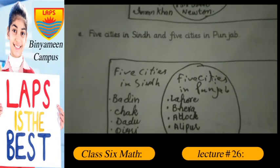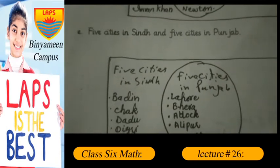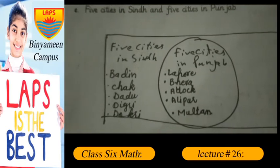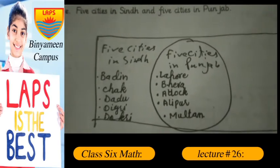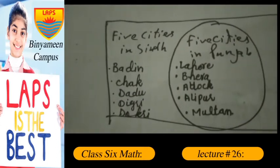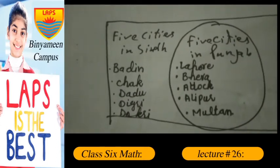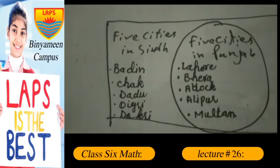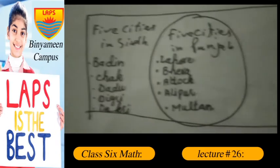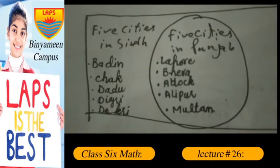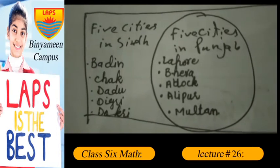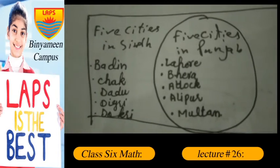Five cities in Sindh and five cities in Punjab. Five cities in Punjab: Lahore, Bhera, Attock, Alipur, Multan.